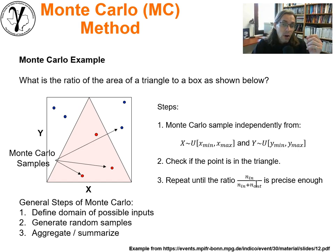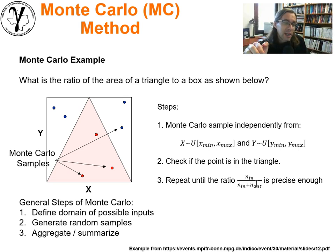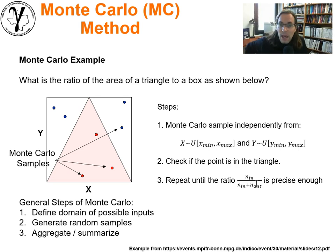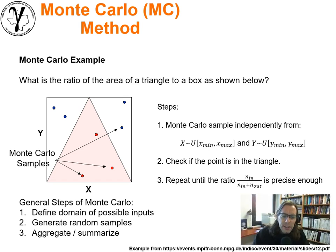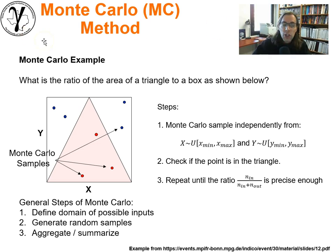So what have we done? We solved this geometric problem where the only thing we could do was tell if a point was inside the triangle. Never once did I have to calculate the area of the triangle. But by doing enough samples, I got to the distribution — in this case just simply a proportion. The general steps of Monte Carlo: define the domain of possible outcomes, generate random samples, and aggregate and summarize those results to get your answer. Now let's go one step further and look at the idea of Markov chain Monte Carlo.